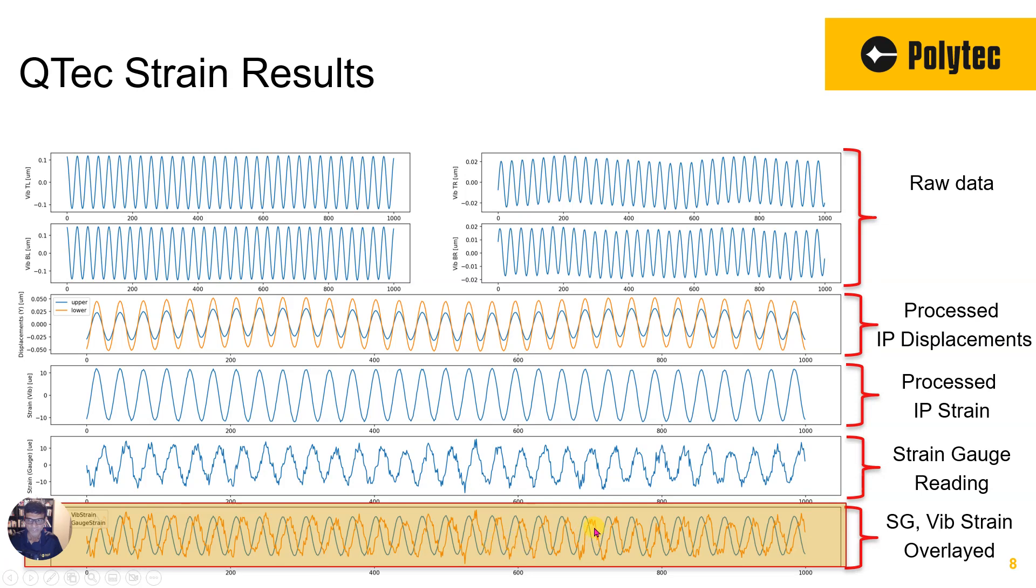And so it all boils down to this one final graph here where we are comparing the strain gauge measurement, which is the orangish, and then the vibrometer-based strain measurement overlaid on it. You can see, yes, of course, it's much cleaner, and with averaging, maybe you can clean up some of the strain gauge, but the bottom line is that the data corroborates with traditional techniques.